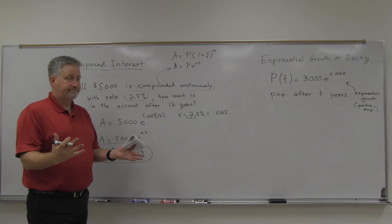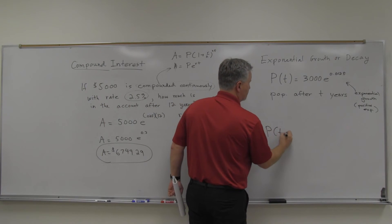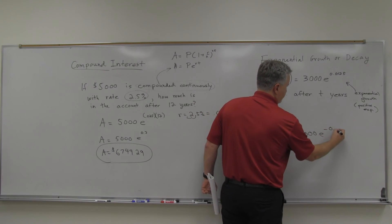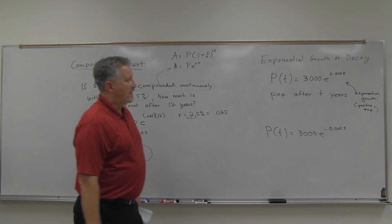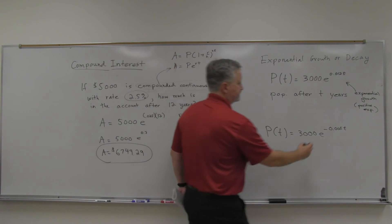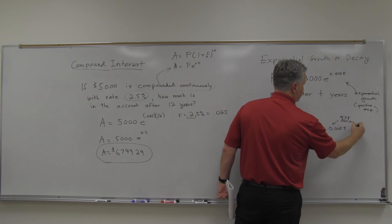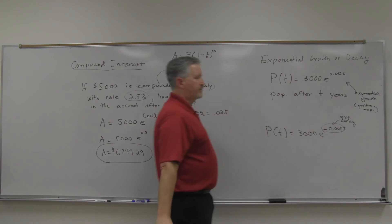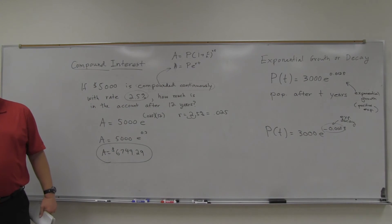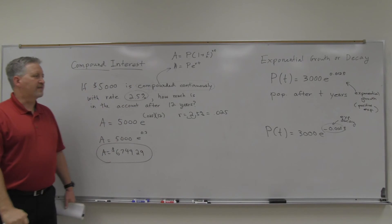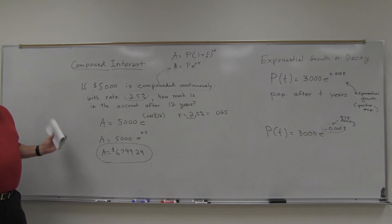If you have the negative, 3000 E to the negative 0.005 T, that would be the decay. Exponential decay. It's really all based on that number because that tells you decline, decreasing graph or increasing graph. That's where that's going to tell you that. So anyway, same, very same idea right now.